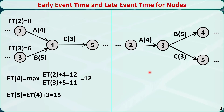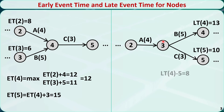This is a part of another project network with activities A, B, and C. Their durations are 4 days, 5 days, and 3 days respectively. Activities B and C are successors of activity A. Suppose we know the late event times for nodes 4 and 5 are 13 and 10 respectively. Let's find the late event time for nodes 3 and 2. The latest time node 4 can happen is at time 13, and the duration of activity B is 5, so the latest time node 3 can happen via B is 13 minus 5, equal to 8. The latest time node 5 can happen is at time 10, and the duration of activity C is 3, so the latest time node 3 can happen via C is 10 minus 3, equal to 7.